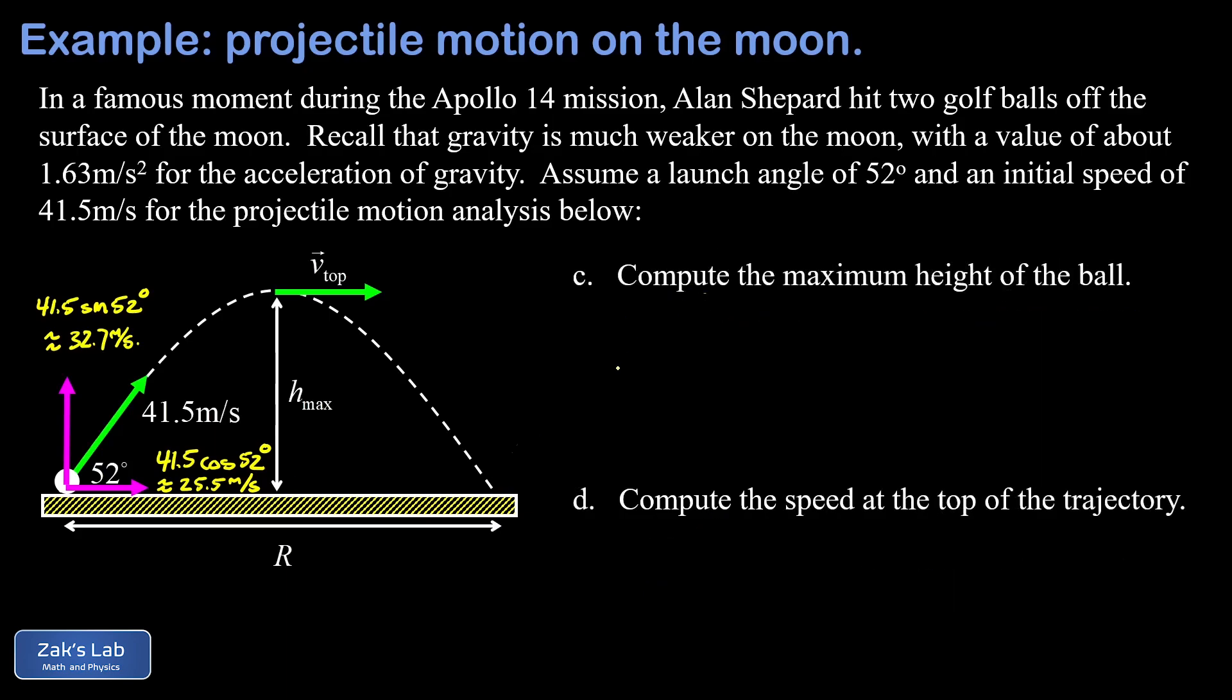Next, we move on to part C, where we're trying to find the maximum height of the ball. There are basically two ways to approach this problem. Because the flight of our projectile is completely symmetric, we could take half the flight time and plug that into the y equation. But I'm going to focus on a more direct method that also generalizes to asymmetric flight paths. The key physical point about the top of the trajectory is that V_y is equal to zero there. Now we can use the time independent kinematics equation.